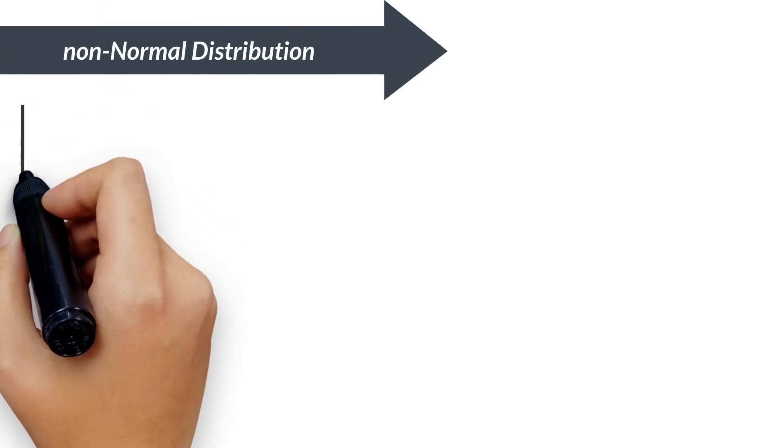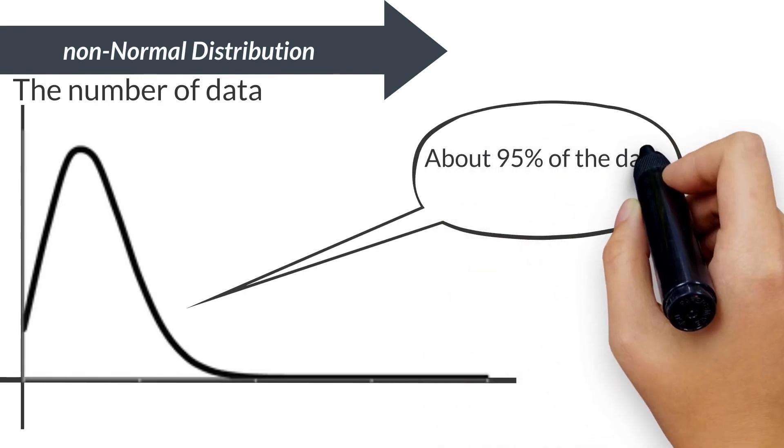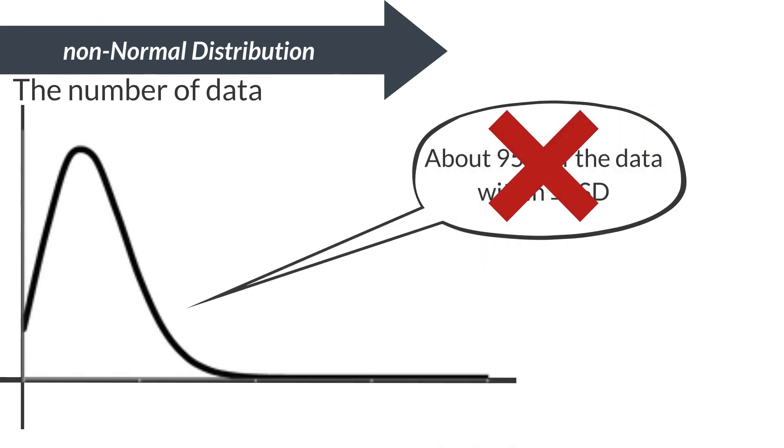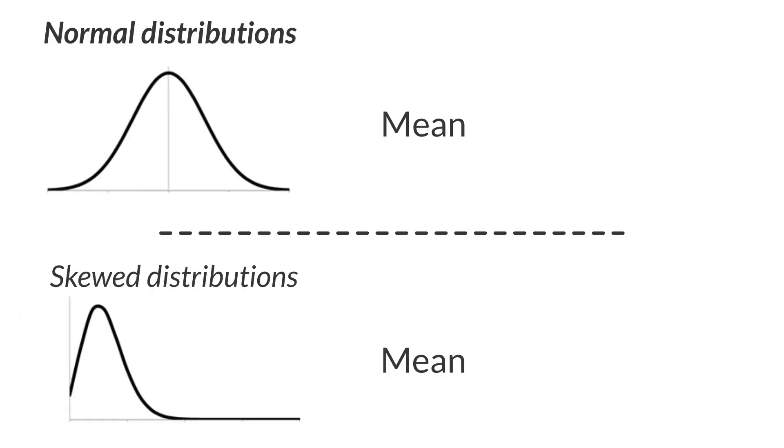However, this rule only applies to normally distributed data. In skewed distributions, the 95% rule doesn't hold. In such cases,